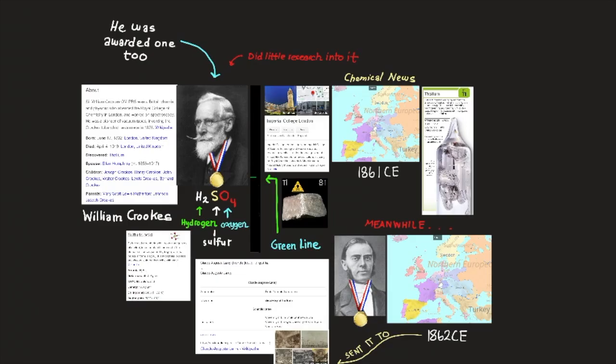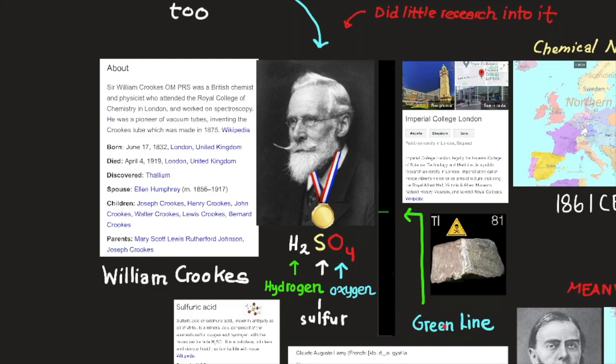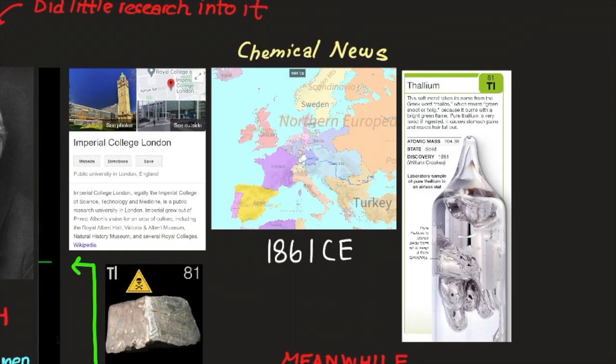So the discovery of thallium was controversial. William Crookes of the Royal College of Science in London was the first to observe a green line in the spectrum of some impure sulfuric acid, H2SO4, and realized that it meant a new element. Here we have the line spectrum. It was a green line. He observed it in sulfuric acid, which consists of hydrogen, sulfur, and oxygen.